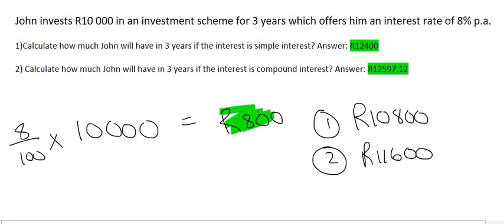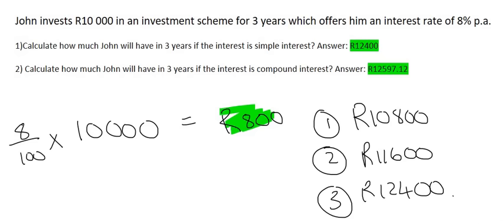So every year that John keeps his money in the bank, he will earn 800 Rand per year. So after three years, John would have a total of 12,400 Rand. That is called simple interest. It's very simple. It's easy.